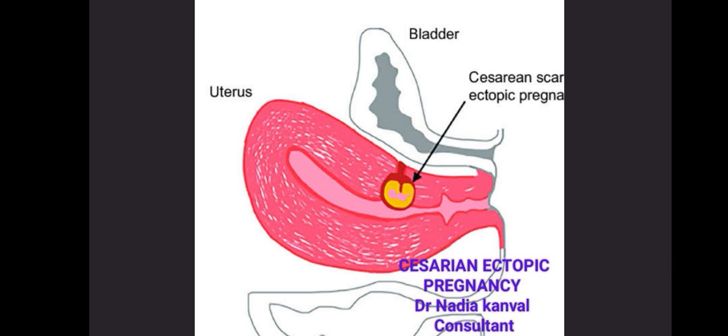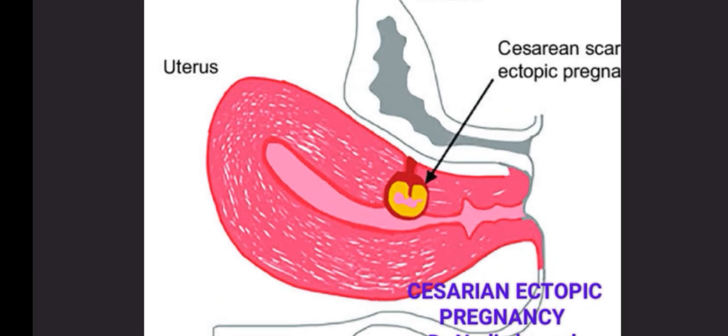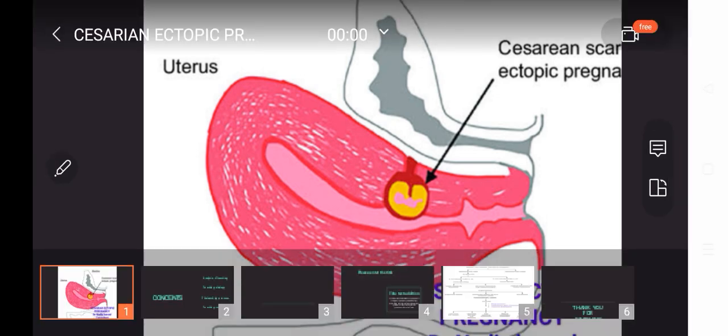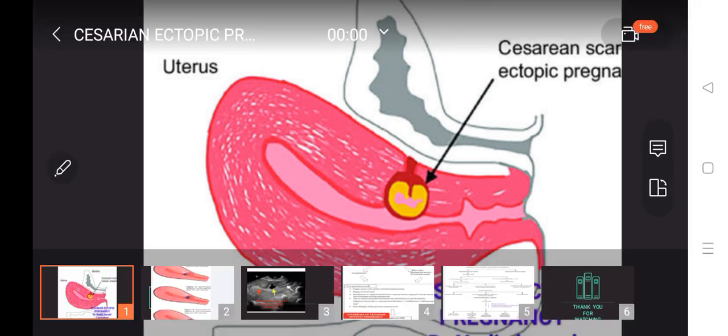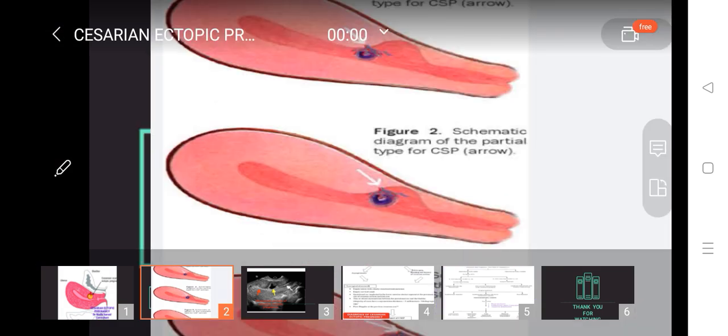As far as Caesarean Ectopic Pregnancy is concerned, you see in this diagram that this patient is having a scar and this scar is having the pregnancy inside it. If this pregnancy is going to involve the myometrium and ultimately the perimetrium, there can be rupture, increased bleeding, and ultimately morbidity and mortality in the patient.